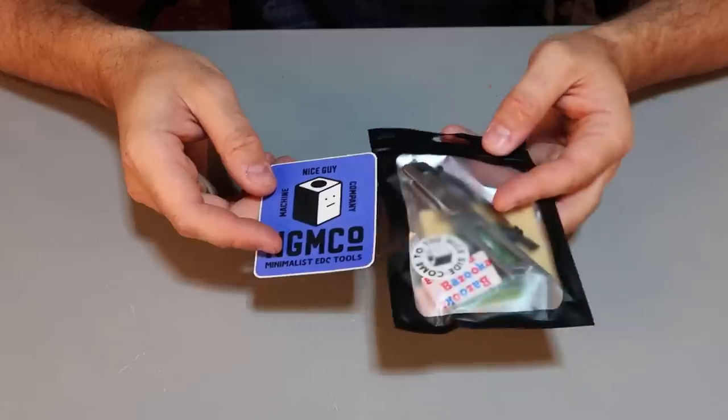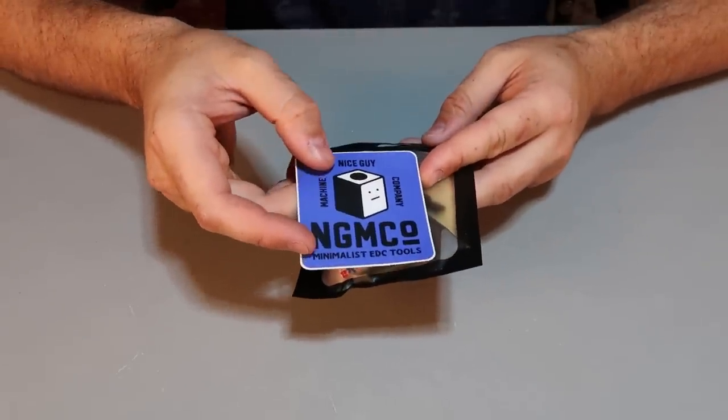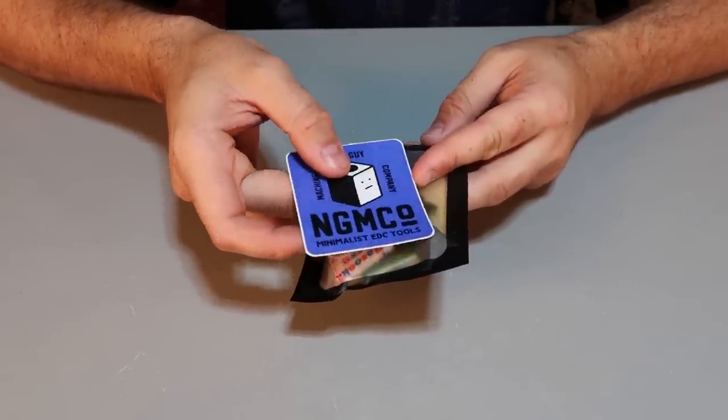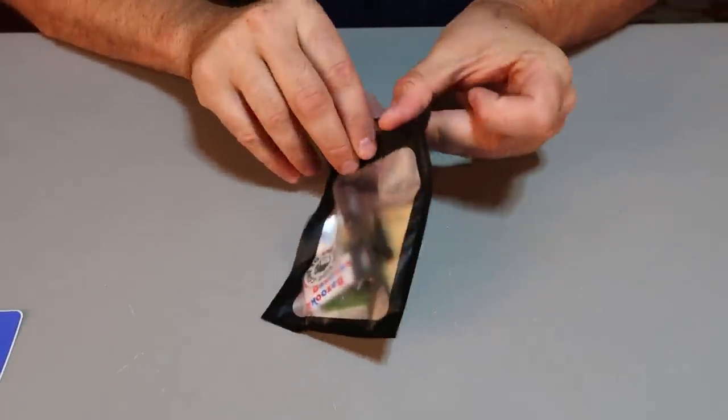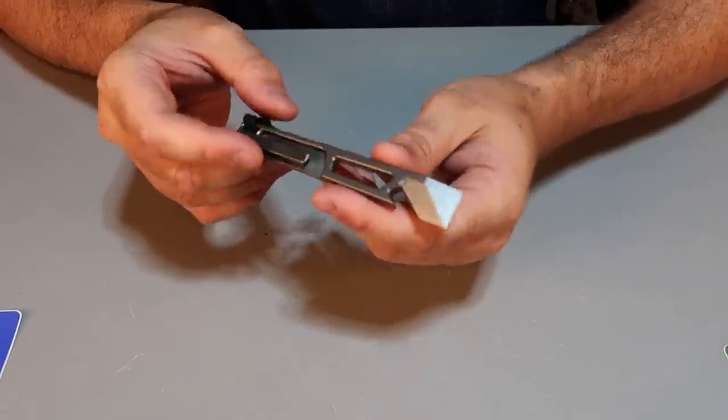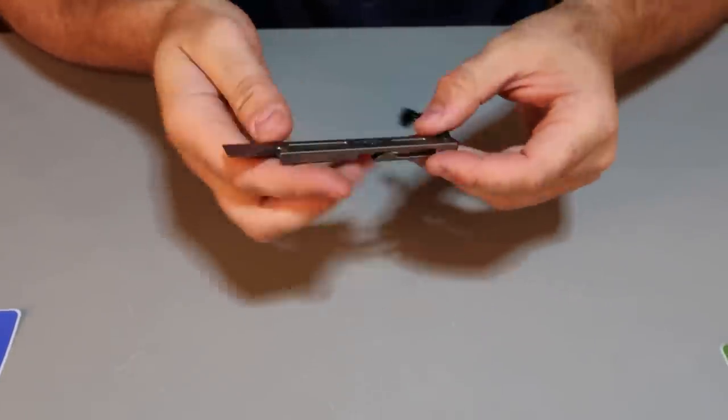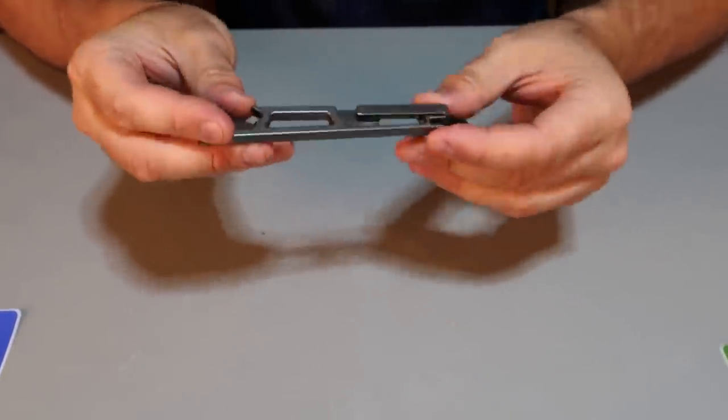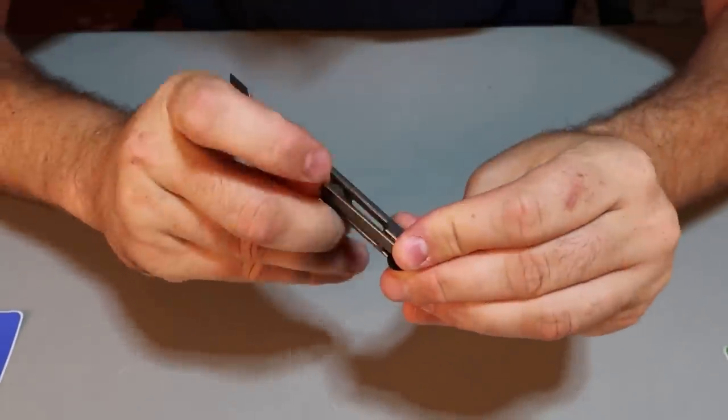Here's another EDC gadget I was given at the Blade Show, Machine, nice guy company. Minimalist EDC tools, beautiful. I'm going to have to check it out, see what else I can find in the future. So this is a pry bar. That's cool, very lightweight because it's out of titanium. And that looks like a fingerprint on the inside there.